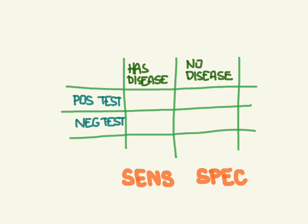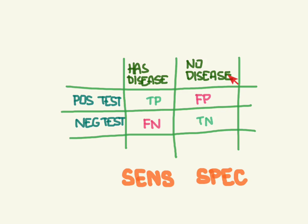You'll remember our familiar two-by-two table from when we looked at sensitivity and specificity. At the top we have whether a patient did or did not have the disease — that's their disease state — and here is the state of the test, whether it was positive or negative. The correct values are true positive and true negative. The times the test was wrong: a false negative is when the test was negative but should have been positive, and a false positive is when the test was positive but should have been negative.